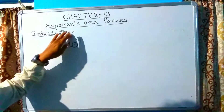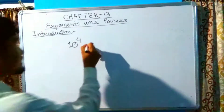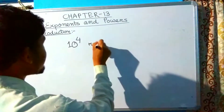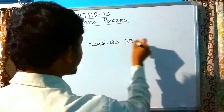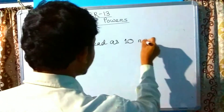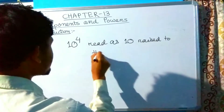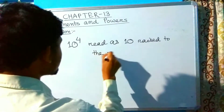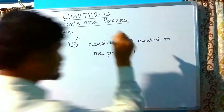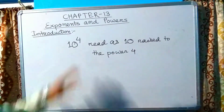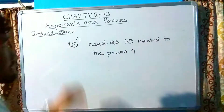Let's start with an example: 10 raised to the power of 4. We read this as '10 raised to the power of 4.' It is written in exponential form.